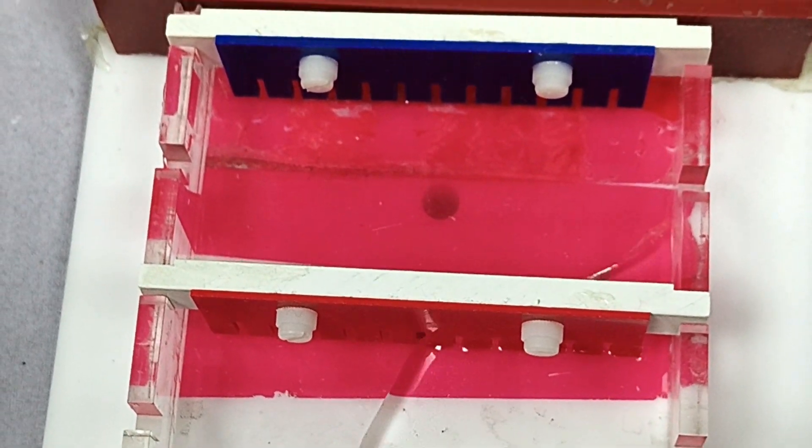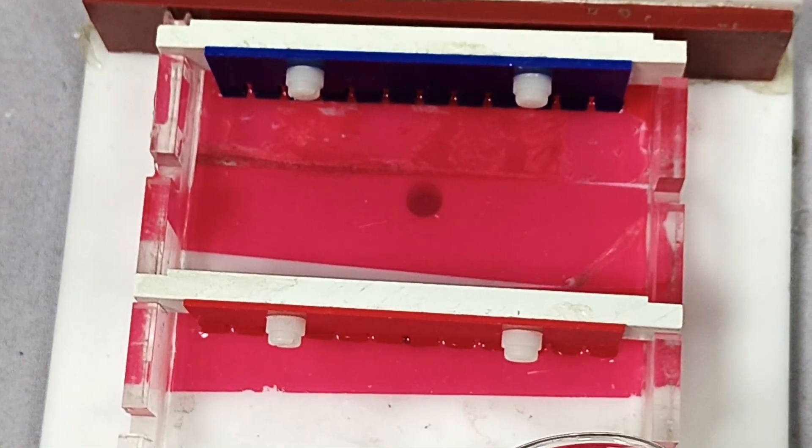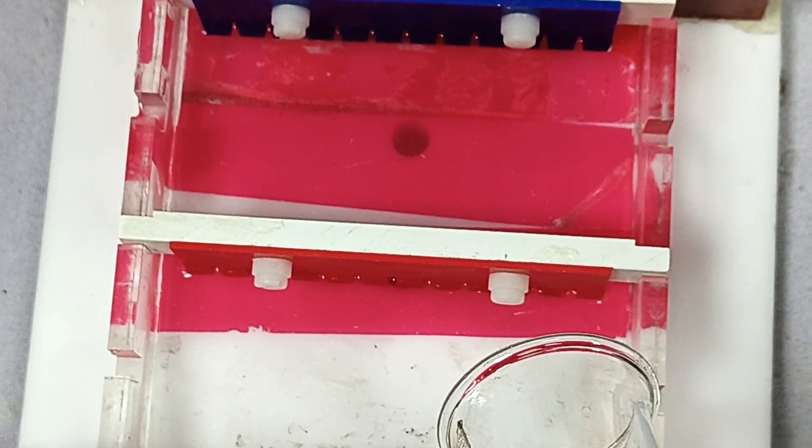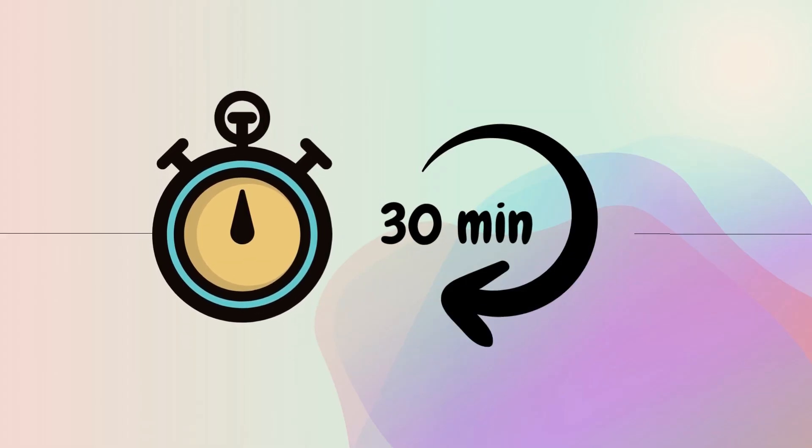Slowly pour this solution to the casting tray so that no bubbles are formed in the gel during the pouring. Even if some bubbles appear, you can pop them using a pipette tip. Let the gel solidify for 30 minutes.